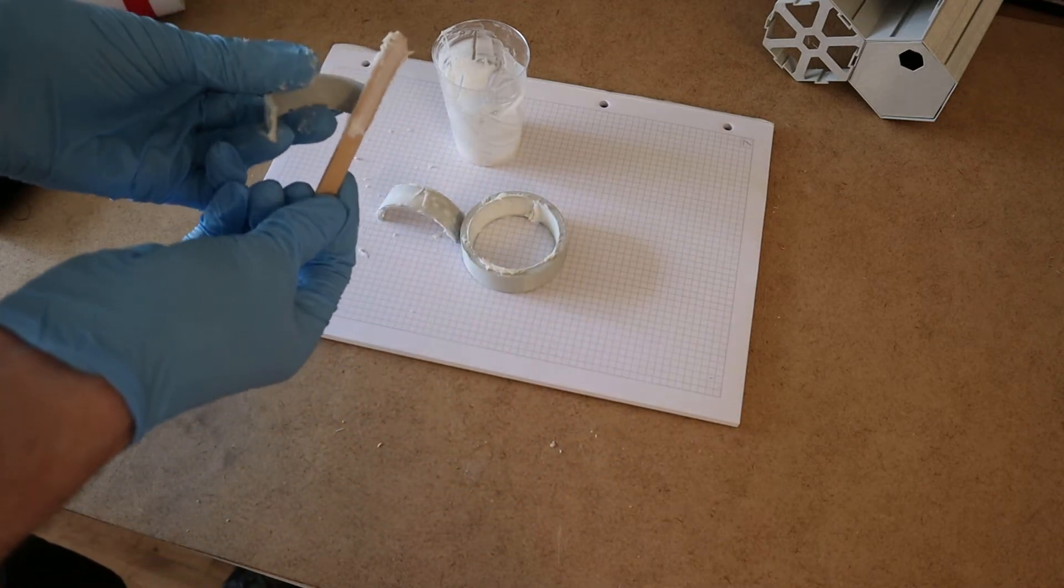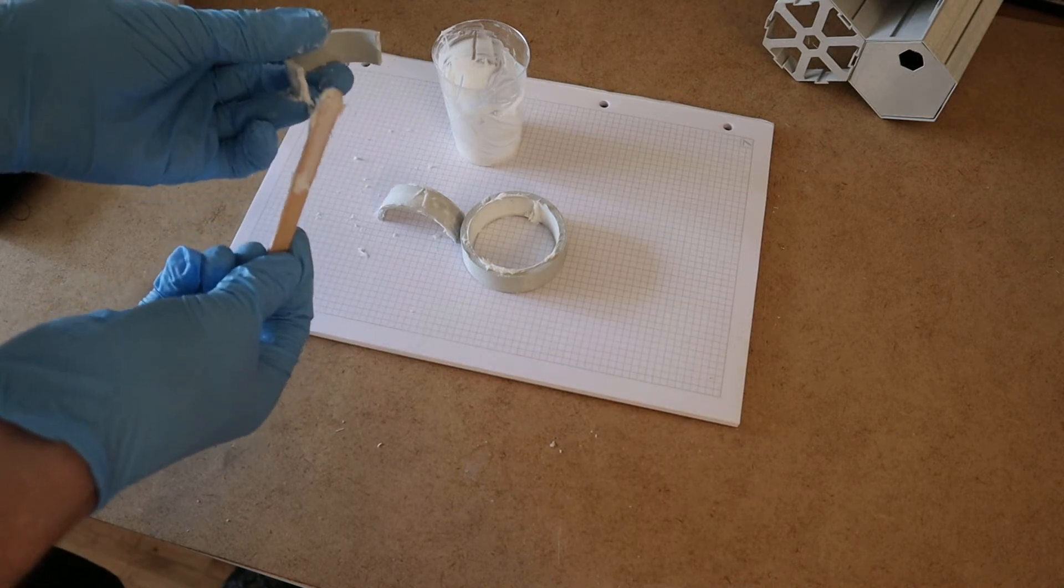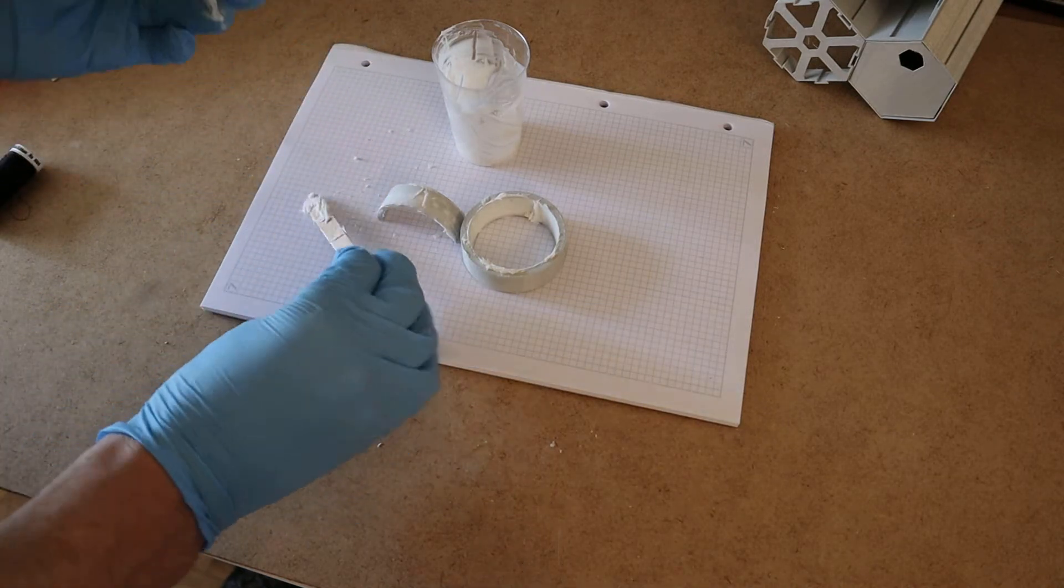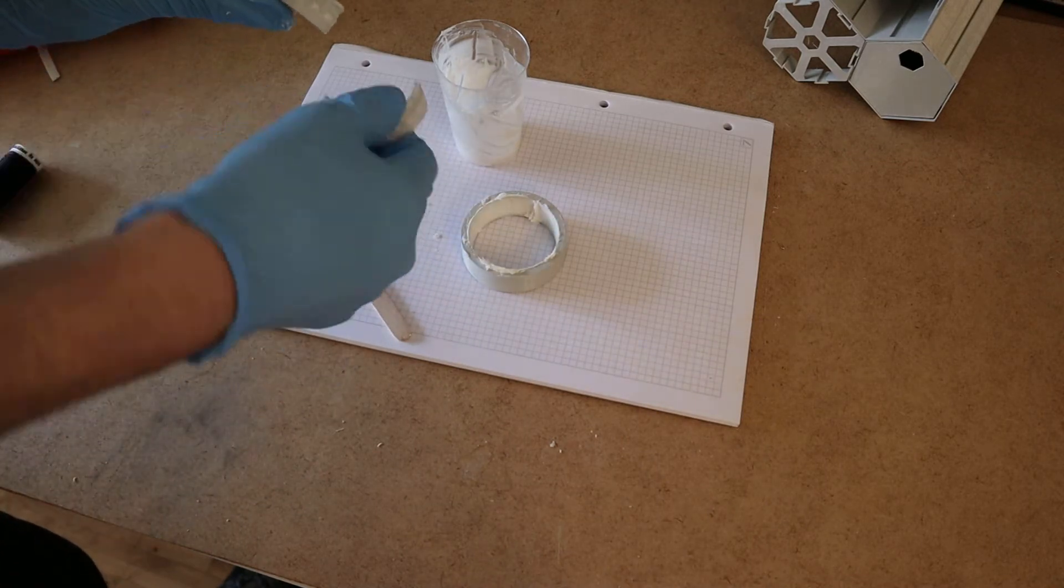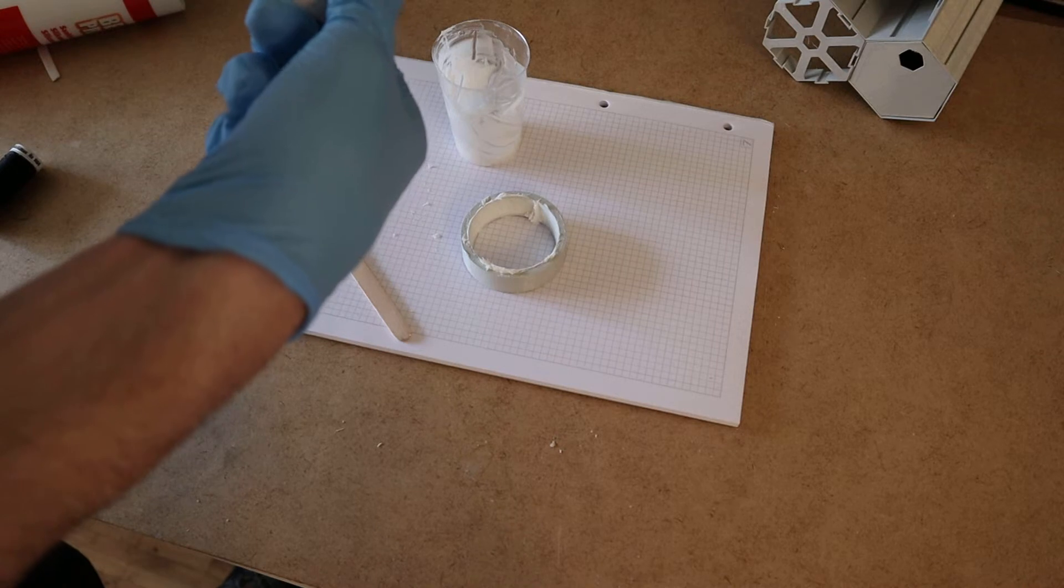And I'm just going to apply a bit of silicone to the end so that I can glue the two parts of the mold together just temporarily. So make sure you've got the two parts the same way up. And we're just going to stick those together.